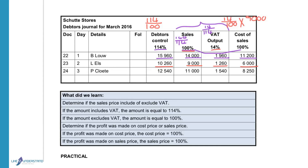In this example, the VAT was provided as 1,540. To calculate the debtors figure: 114 divided by 14 times the amount. For the sales figure: 100 divided by 14 times the amount gives the sales figure. The cost of sales we calculated as 8,250.